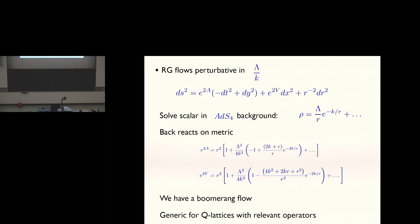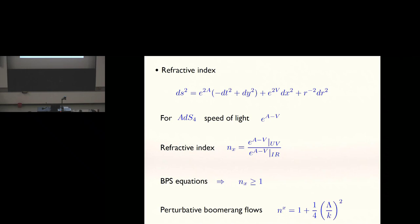Here is the ansatz for the metric. If we're in an AdS4 solution, e to the a minus v is the speed of light. Now you can always scale t and x so that speed of light is one. You can do that at infinity, but then what you get in the infrared is going to be a diagnostic, a physical observable of the RG flow. In other words, e to the a minus v divided by e to the a minus v in the UV and the IR is an invariant, and correspondingly, as it's the ratio of the speeds of lights, we call it the refractive index. I think Steve Gubser was the first one who came up with that term.